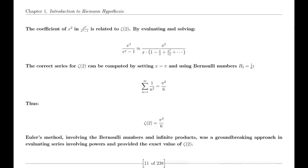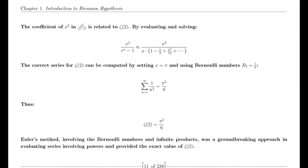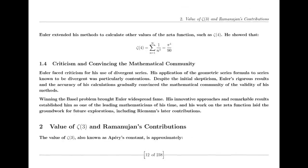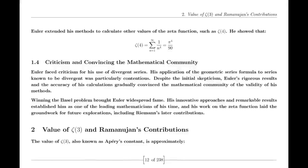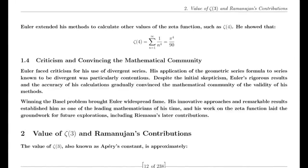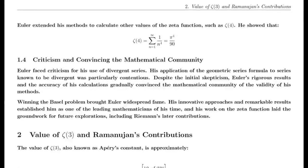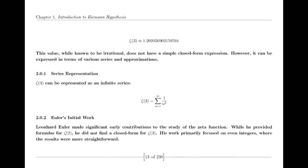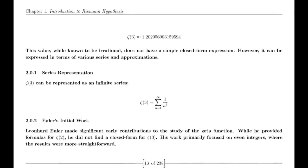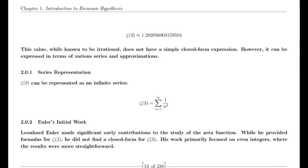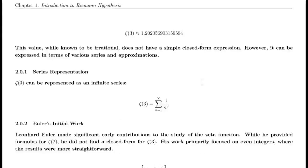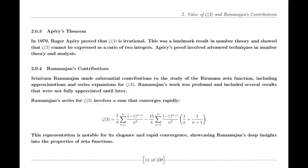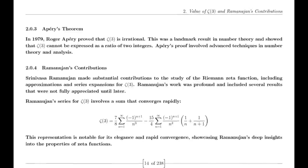Riemann's Hypothesis. Riemann proposed that all non-trivial zeros of the zeta function lie on the critical line where the real part of s is one-half. This hypothesis has profound implications for number theory, particularly in understanding the distribution of prime numbers. Despite extensive numerical evidence supporting the hypothesis, a formal proof or disproof remains one of the greatest challenges in mathematics.